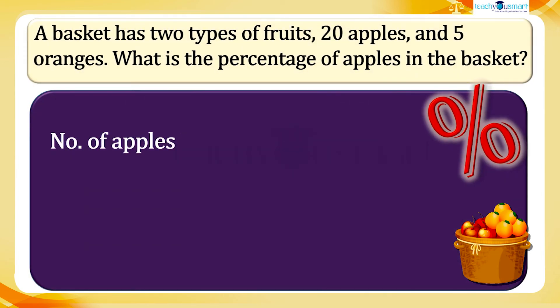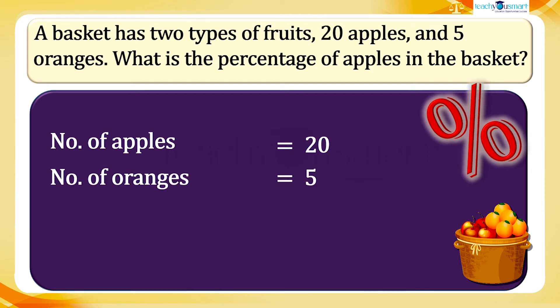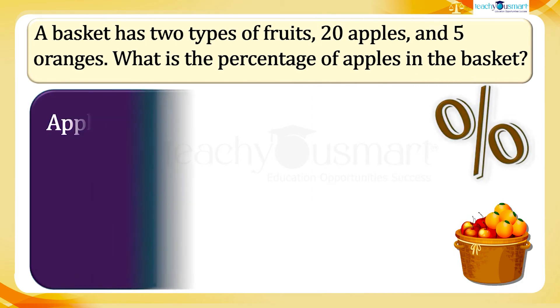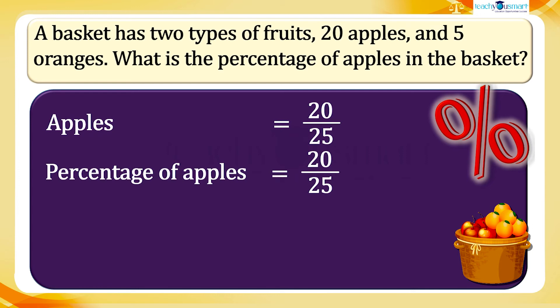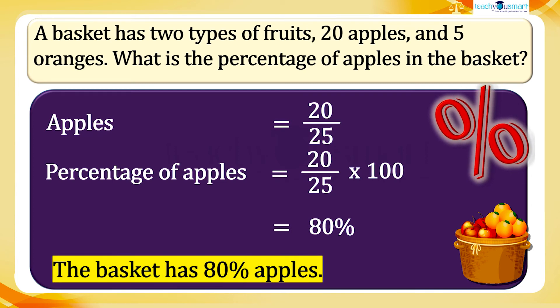We have number of apples equals 20, number of oranges equals 5, total fruits equals 25. Out of 25 fruits, the number of apples equals 20 by 25. So the percentage of apples is equal to 20 by 25 multiplied by 100, equals 80 percent. Thus the basket has 80 percent apples.